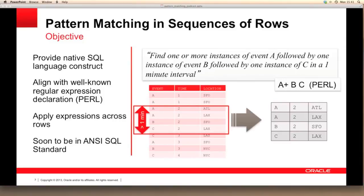This would allow us to search for one or more instances of event A followed by one instance of event B followed by one instance of event C, and we might add an additional requirement that the whole pattern should occur within a one minute interval. So what is needed is a native SQL construct that will allow us to search across row boundaries. The solution should align itself with well-known regular expression declarative languages such as Perl. Oracle database 12c provides such a feature and this will be incorporated into the ANSI SQL standard.